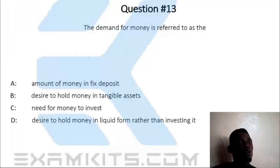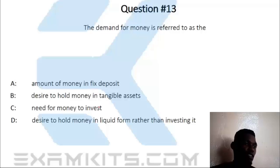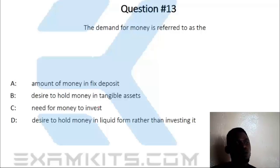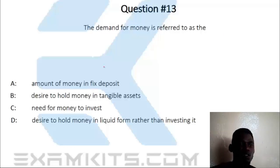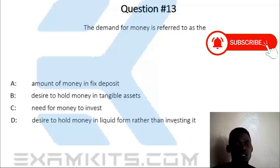Question 13. Demand for money is referred to as the dash. A. Amount of money in fixed deposit. B. Desire to hold money in time of assets. C. The need for money to invest. D. Desire to hold money in liquid form and investing it. Desire to hold money in liquid form and investing it is the correct answer.